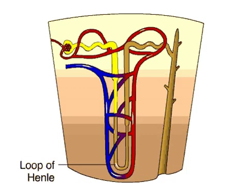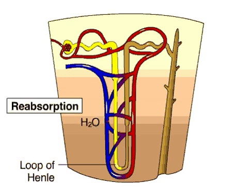As the filtrate moves down the loop of Henle, the concentration of solutes increases in the interstitial fluid surrounding the nephron tubule. Since this portion of the tubule is permeable to water, water leaves by osmosis and is reabsorbed into the blood. This concentrates the filtrate.